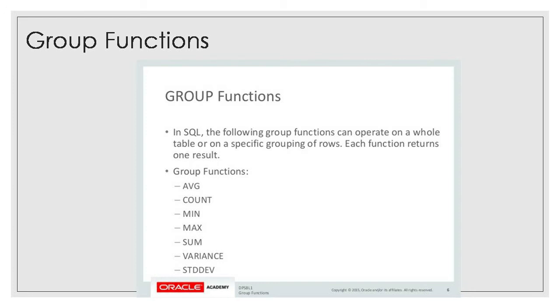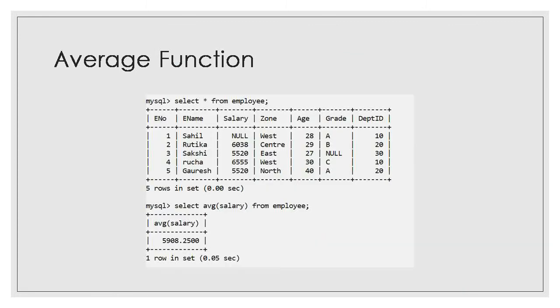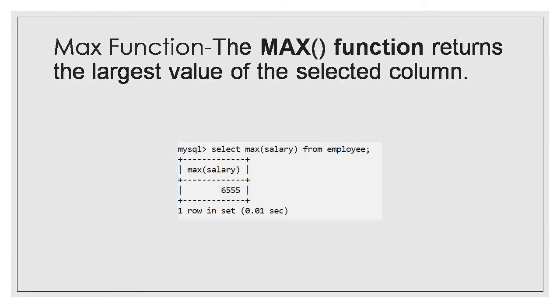Suppose you want to calculate the average salary based on groups of departments. You will use: SELECT AVG(salary) FROM employee GROUP BY department_id. So the average will be calculated for Department A, Department B, Department C separately — each department will have its own group average.